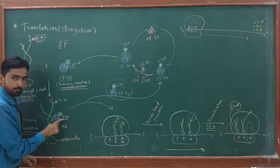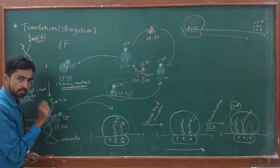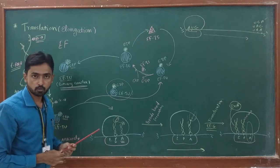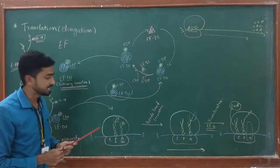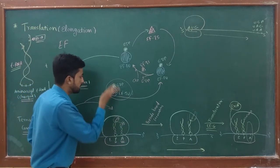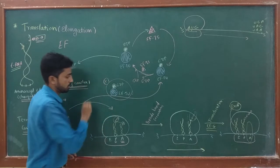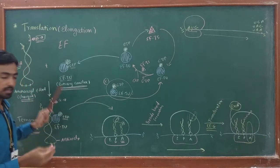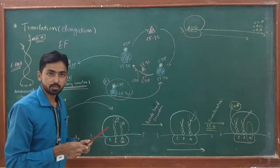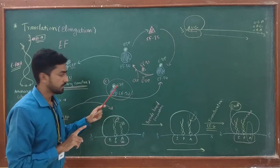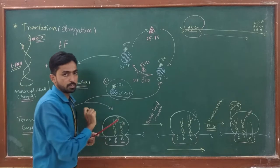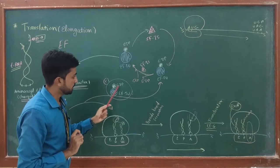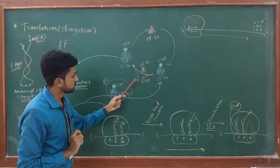EF-TU-GDP and EF-TU-GTP are the same protein; the only difference is that GTP is replaced with GDP due to loss of one phosphate. This EF-TU-GDP is in the inactive form and cannot bind again to a tRNA until this GDP is replaced by GTP. The replacement role is carried out by the EF-Ts factor, which catalyzes the reaction in which GDP leaves EF-TU and GTP gets attached to EF-TU.